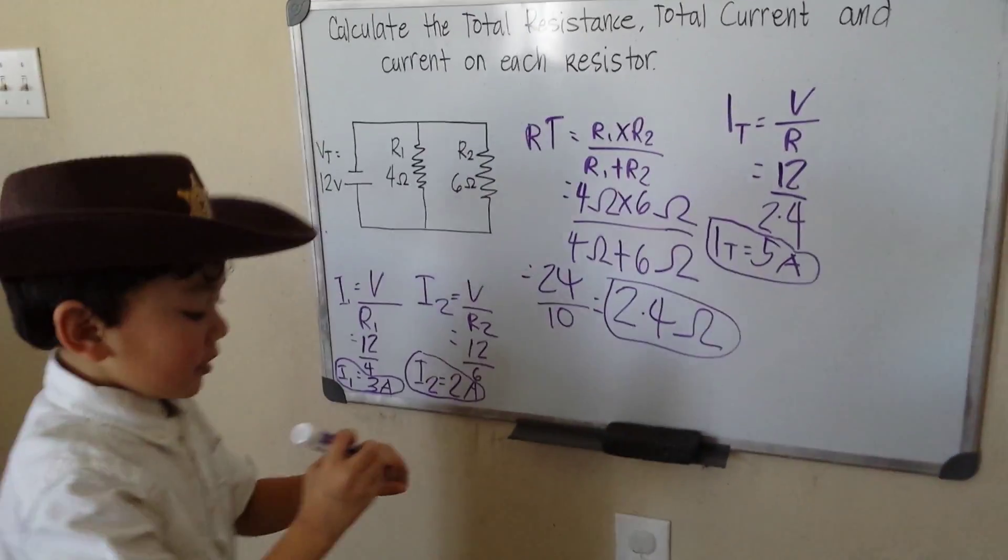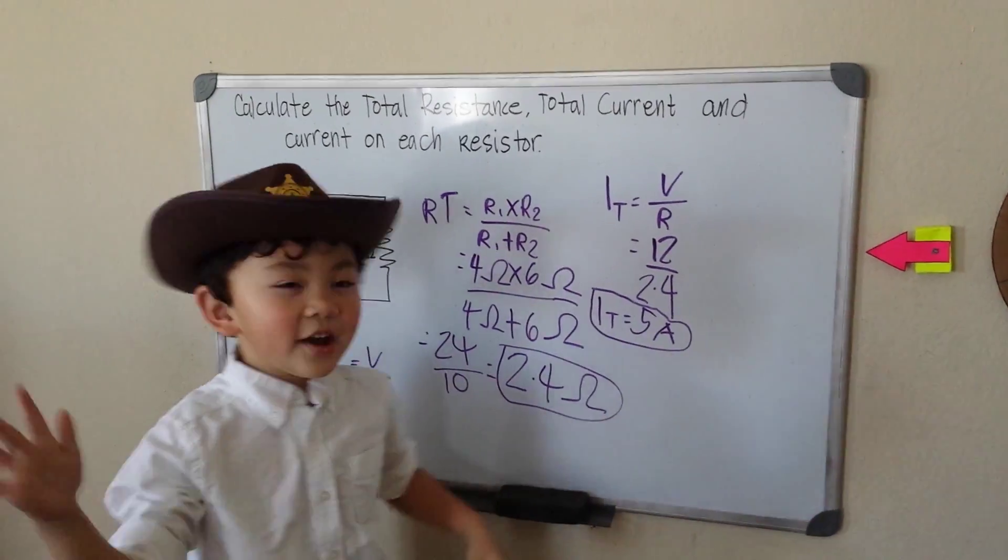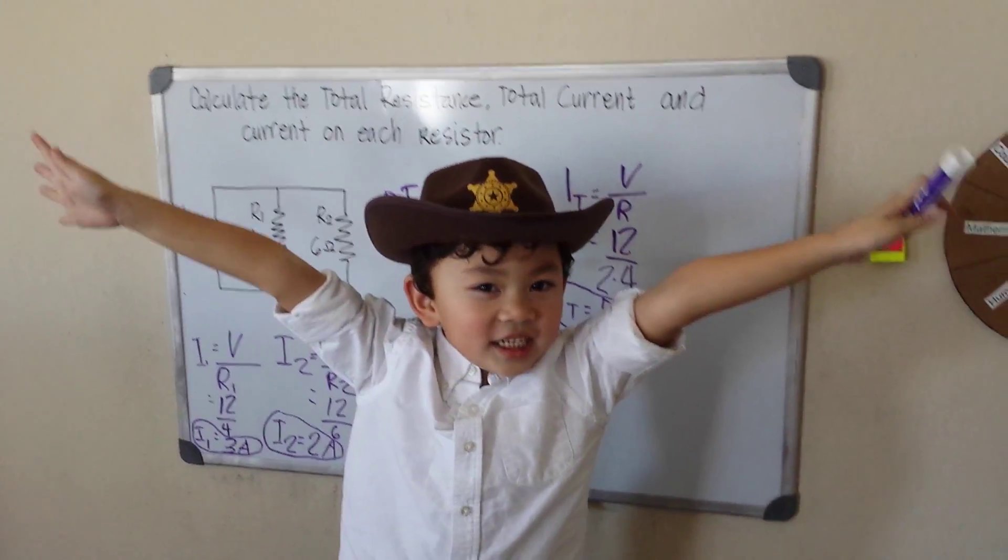So 3 amperes plus 2 amperes is 5 amperes. Thanks for watching and have a good day.